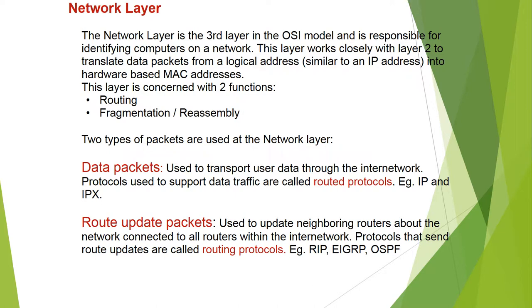This layer is concerned with two functions: routing, and fragmentation and reassembly of packets. Two types of packets are used at the network layer: data packets and route update packets.